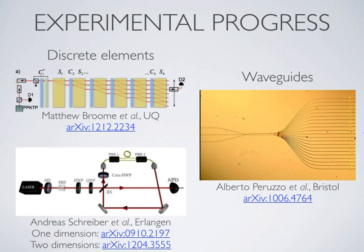Now let's look at some recent experiments. There are experiments showing how to build the unitary network that performs the interference. On the left are two experiments using discrete optical elements, and on the right is an integrated waveguide device. Both types are quantum walk experiments on linear graph structures, which as I said are equivalent to boson sampling. These first experiments were done with one photon, and a later experiment was done with two photons.